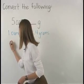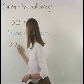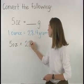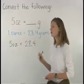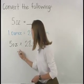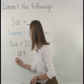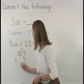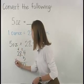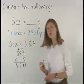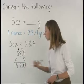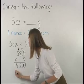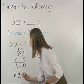So we have five ounces times the conversion factor, which is 28.4. Multiplying 28.4 times five, we have 142.0. That means that five ounces is equal to 142 grams.